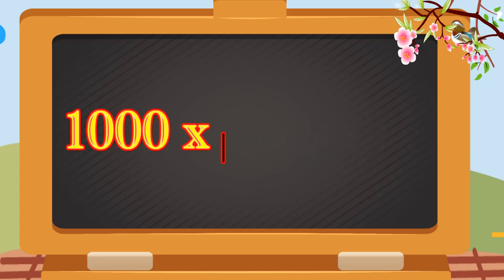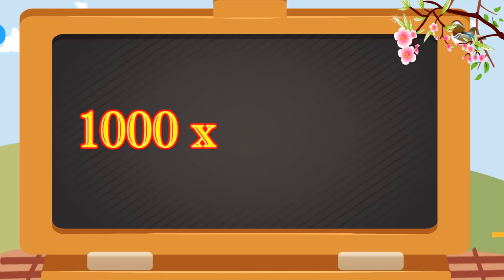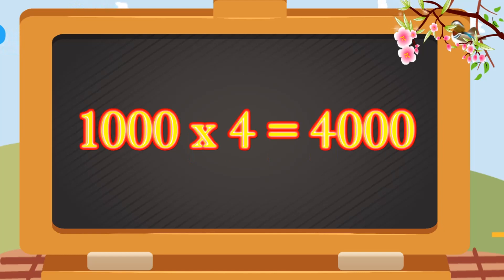1,000 threes are 3,000. 1,000 threes are 3,000. 1,000 fours are 4,000. 1,000 fours are 4,000.